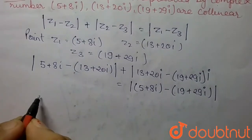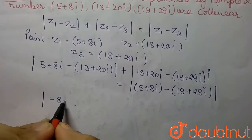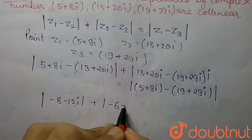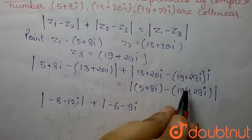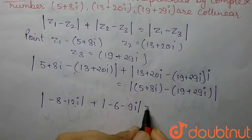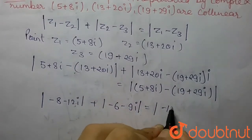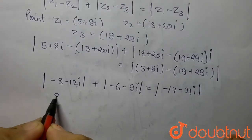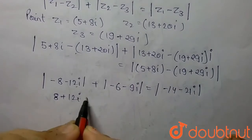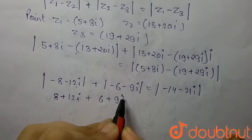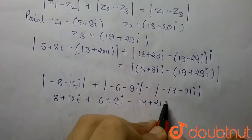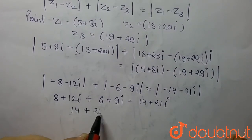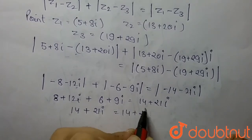Solving, we get |(-8-12i)| + |(-6-9i)| = |(-14-21i)|. Opening the modulus, this becomes |8+12i| + |6+9i| = |14+21i|, which simplifies to 14+21i = 14+21i.